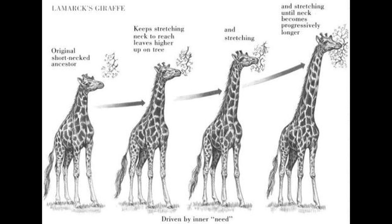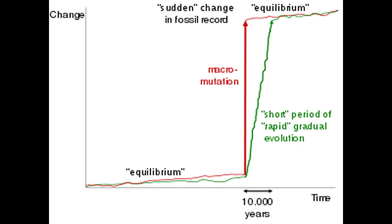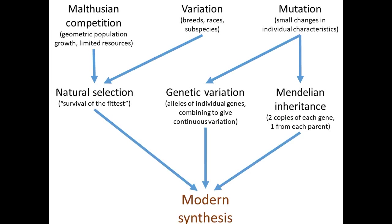Back then, we had some advocates for neo-Lamarckism, such as Ernst Haeckel and Edward Drinker Cope. Another related idea was called orthogenesis — more on that later. Another alternative was mutationism, which posits that new species originated in single, sudden steps caused by large mutations. This idea was fairly popular among the early Mendelian geneticists, which back then were actually adversaries to the Darwinists. But their disputes came to a rest when Mendelian genetics and Darwinian evolution were reconciled to form the modern synthesis in the 1940s.